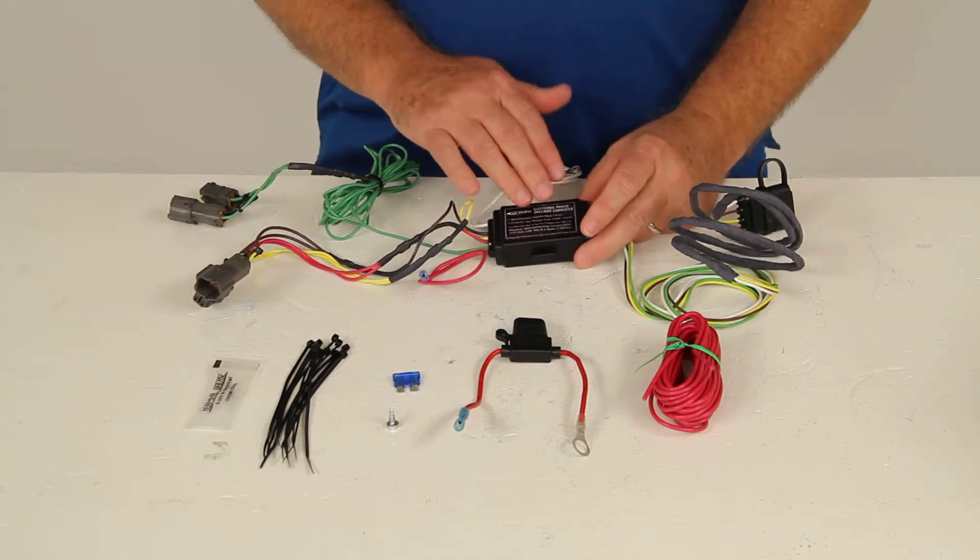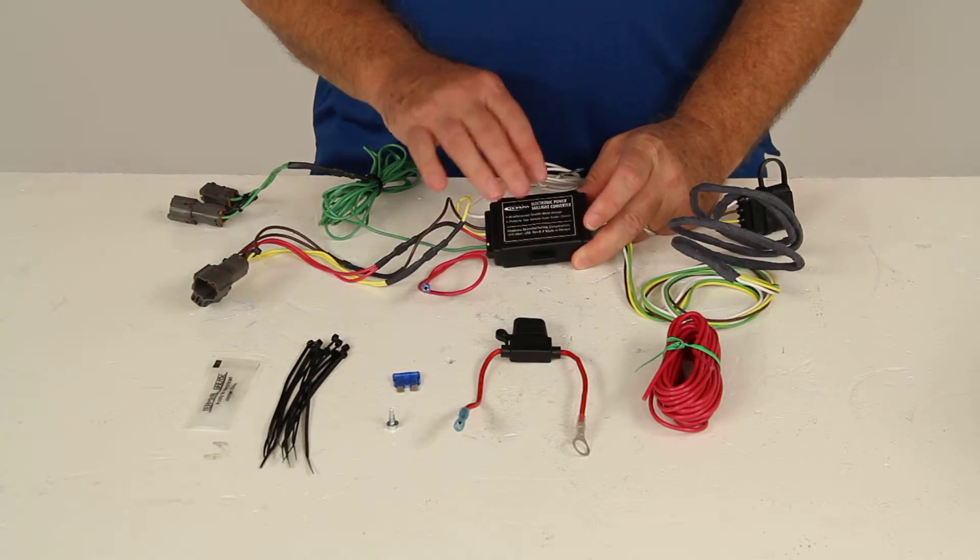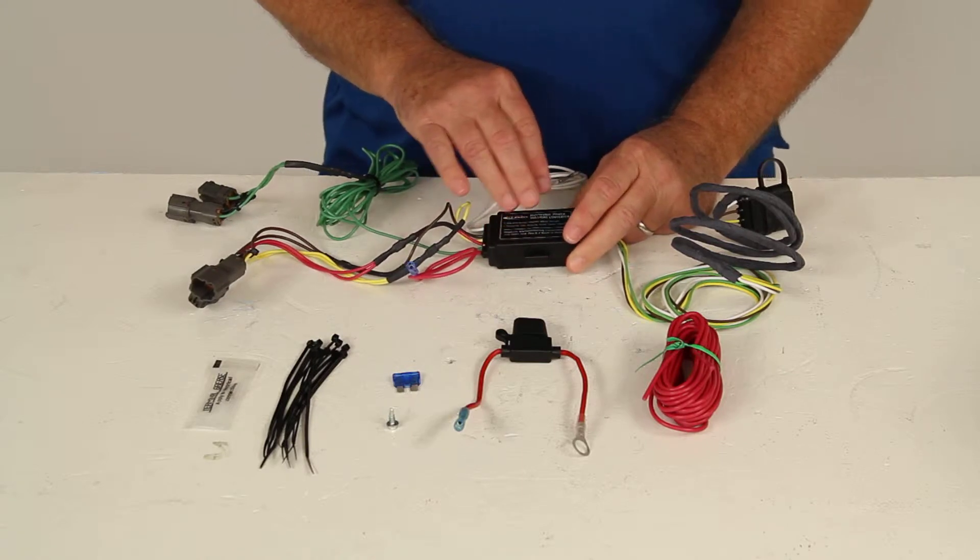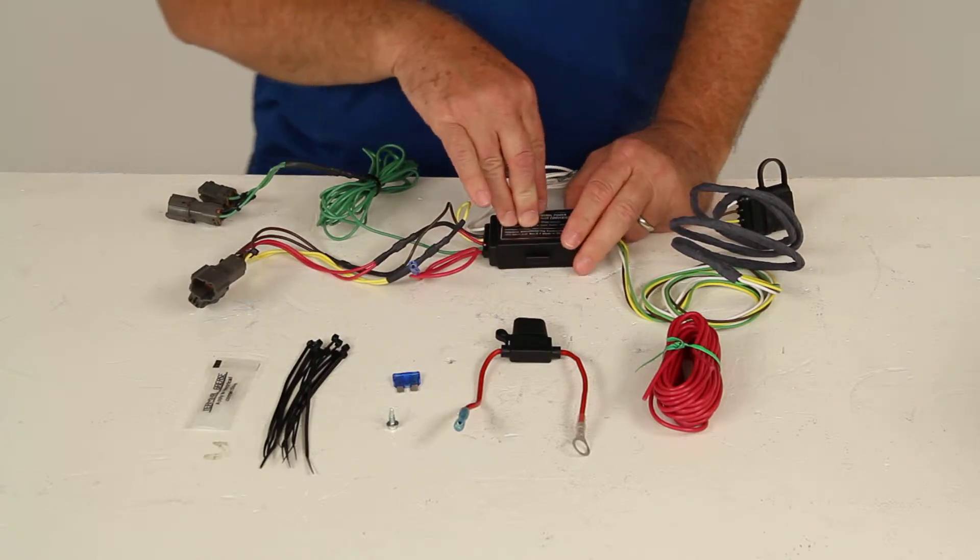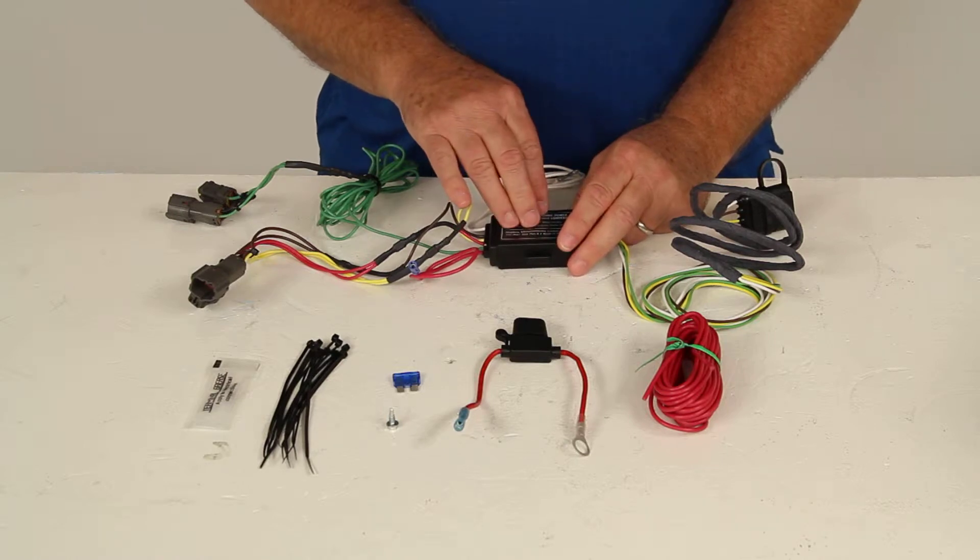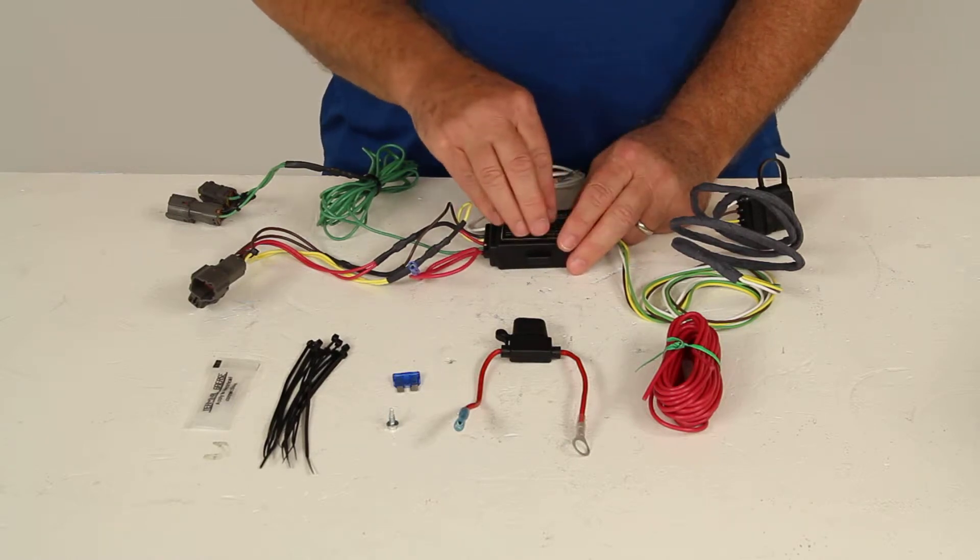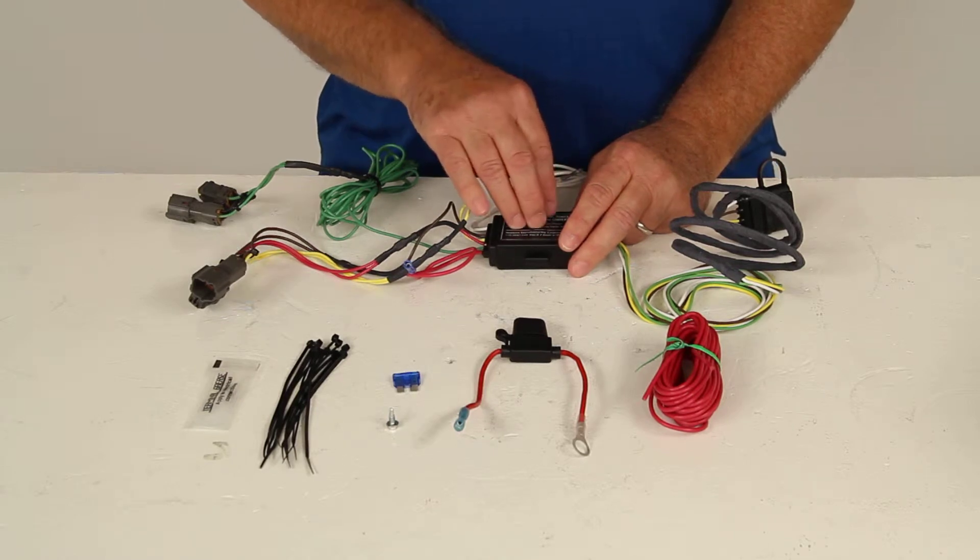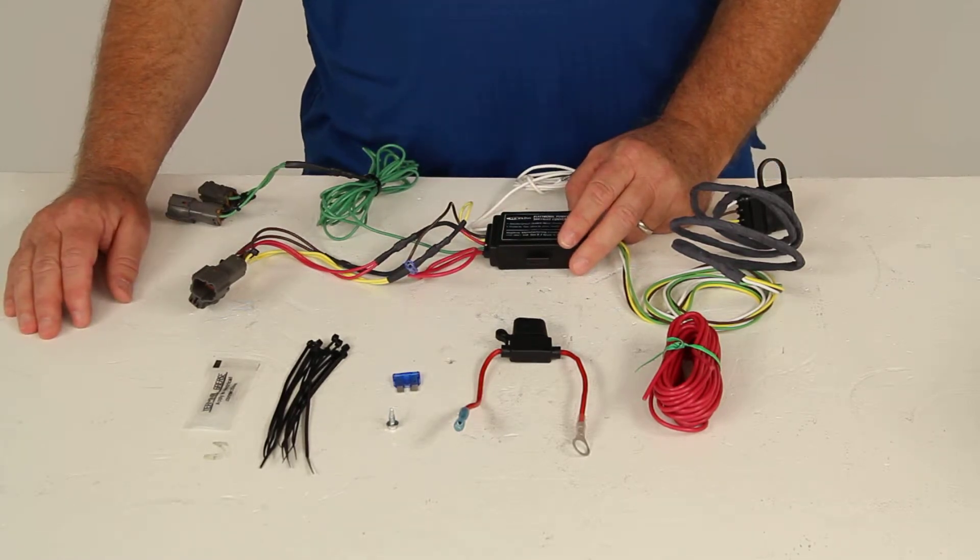Now this powered converter module right here will adapt your vehicle's wiring system to work with the trailer. It will safeguard the vehicle's wiring system by pulling power for the trailer lights directly from the vehicle's battery. So you won't be going through the existing wires in the car. It will protect your factory wiring harness on your vehicle.